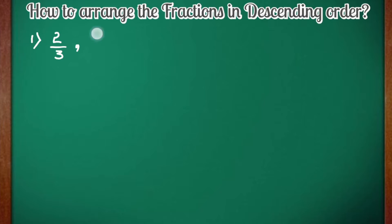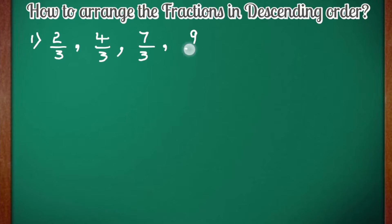Now let us take the first example. Here I have written 2 by 3, 4 by 3, 7 by 3, and 9 by 3. Here you can see all the denominators are 3, which are the same. That means these fractions are like fractions. The fractions with the same denominators are called like fractions.